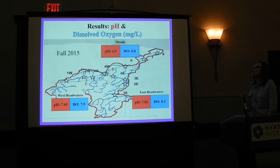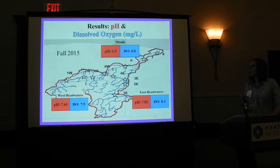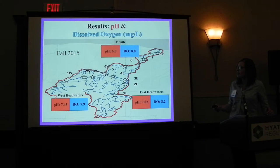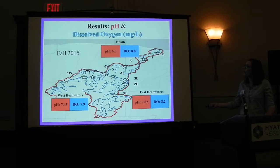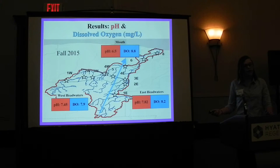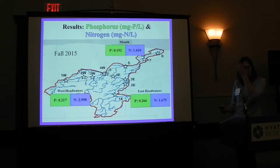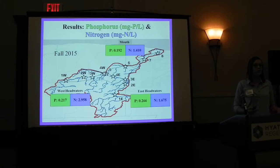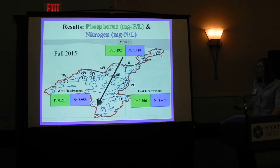pH and dissolved oxygen are another way that I looked at the river continuum. pH cannot really be predicted through the river continuum, but dissolved oxygen can — it should be higher in the headwaters compared to the mouth. But I found in the fall that this was not the case: the mouth was actually higher in dissolved oxygen. And for pH, I found that the mouth was lower than the headwaters. Both of these variables did not follow the expected predictions for the mouth of the river system.